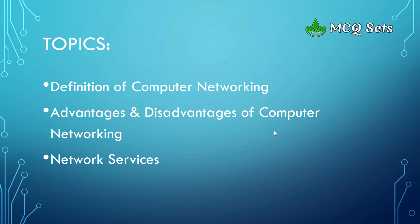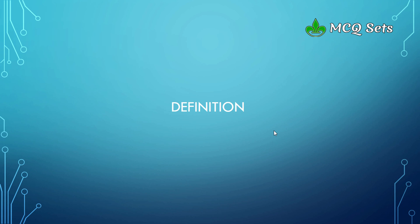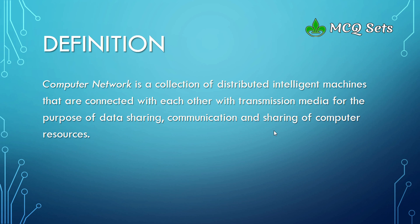Let's go back to our presentation. In this lesson we will talk about three topics only: the definition, advantages, and disadvantages of computer networking, and finally we will also talk about computer services. The definition as given in MCQ Sets is: a computer network is a collection of distributed intelligent machines that are connected with each other with transmission media.